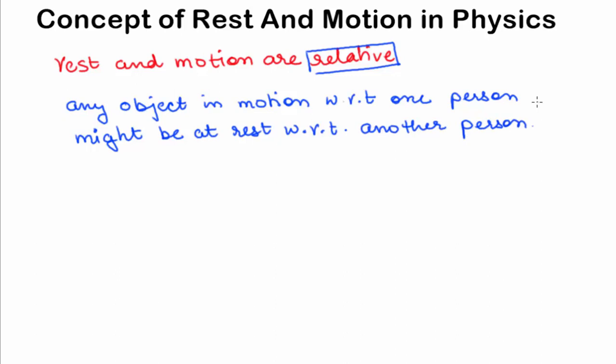For example, consider the case of book kept on the table. Now you picked up the book and started moving. Now this book in your hand when you are moving is at rest. But the same book is in motion or moving with respect to walls of the room.